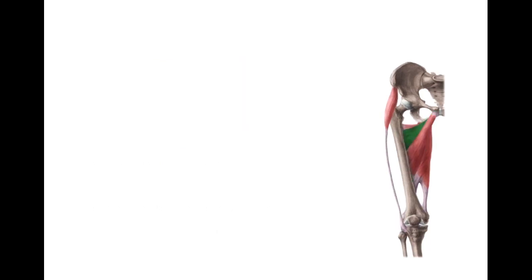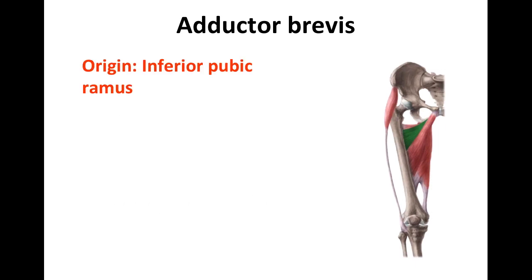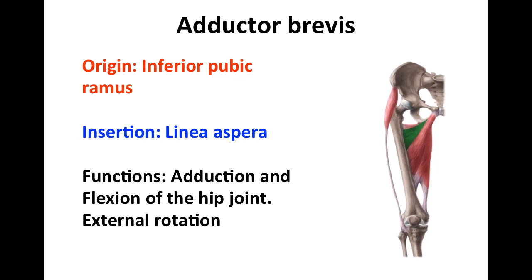Next is the adductor brevis. The point of origin for adductor brevis is the inferior pubic ramus. It inserts in the linea aspera, and its function is adduction and flexion of the hip joint, as well as external rotation.